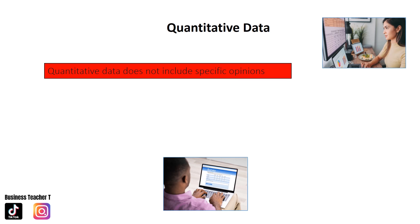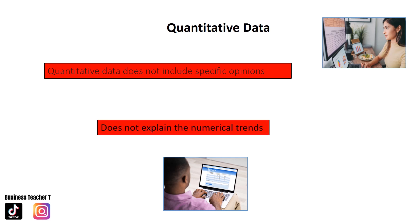However, there are disadvantages to quantitative data. It does not include specific opinions — we would get opinions, emotions, and attitudes from qualitative data, but not from quantitative. In addition, it doesn't explain numerical trends, so where we need an explanation or a description, we wouldn't be able to get that from quantitative data.